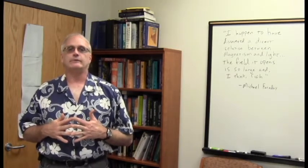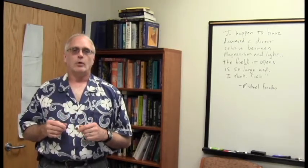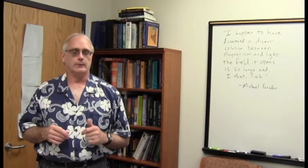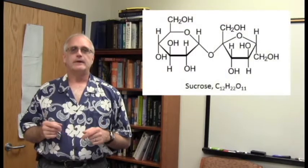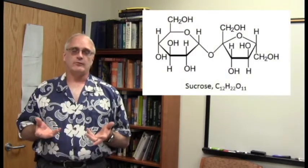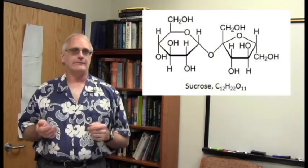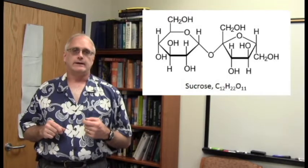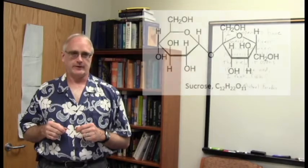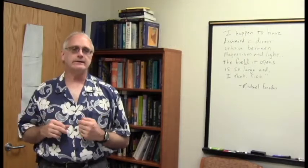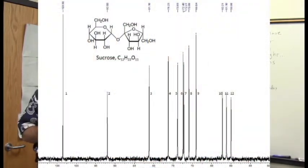I'm going to show you two sets of these spectra, one for a known molecule, one for an unknown. The known molecule is going to be sugar, sucrose. Almost everybody may be familiar with its formula, C12H22O11. It has 12 carbons in it. Here is its carbon spectrum, and indeed it does show all 12 carbons.